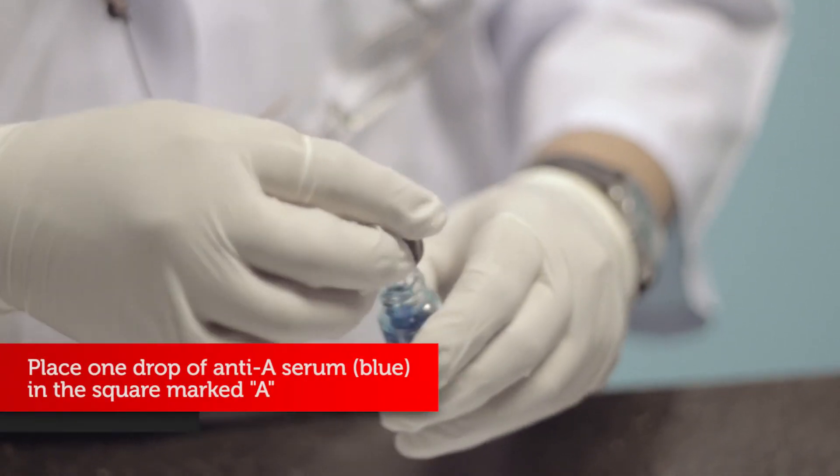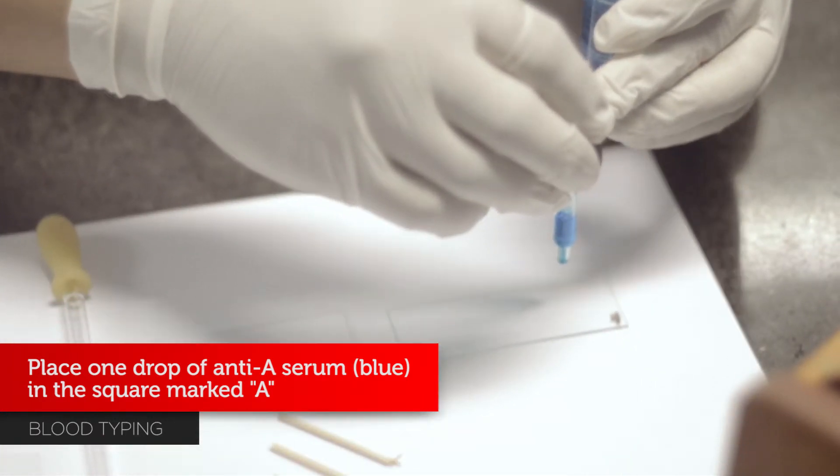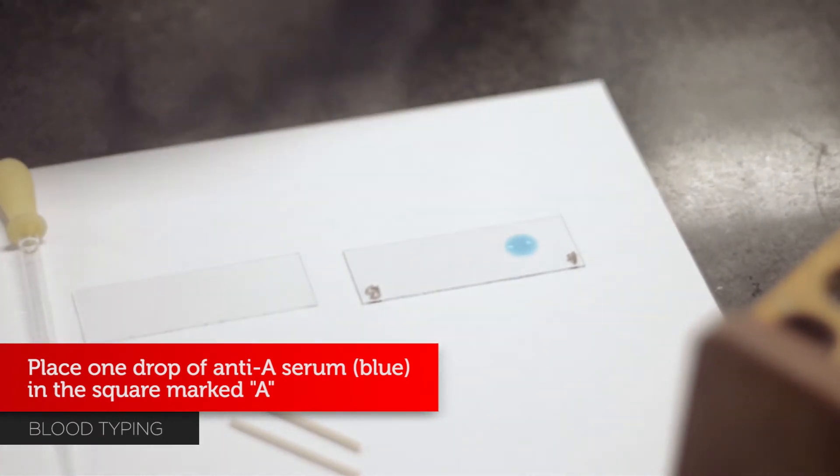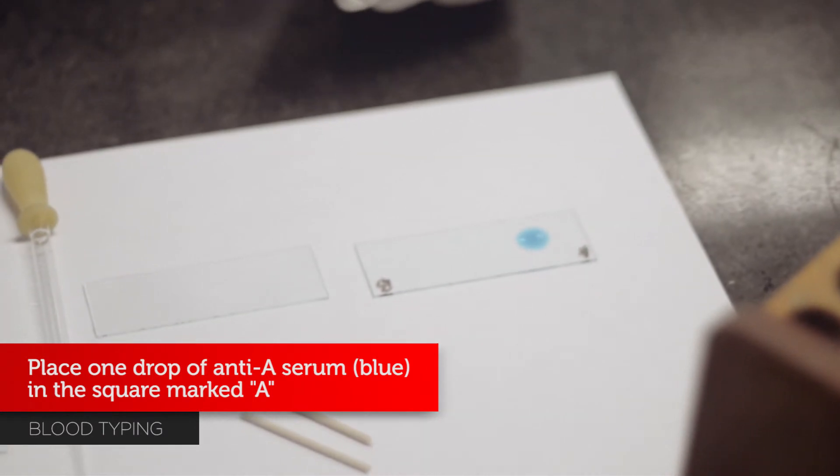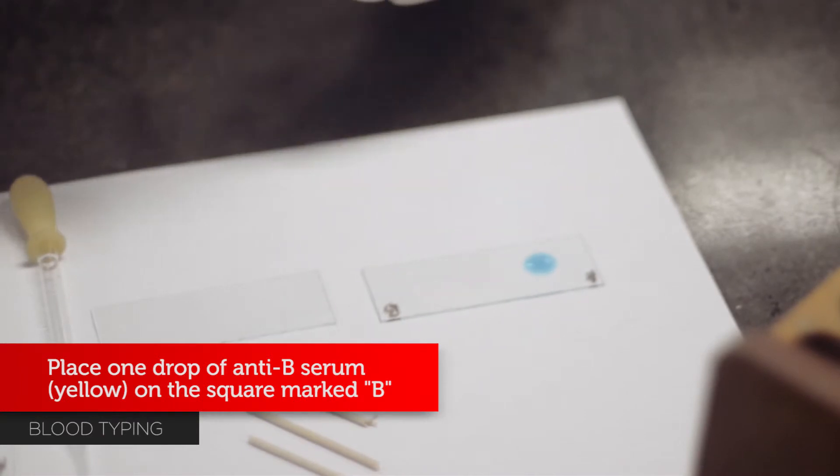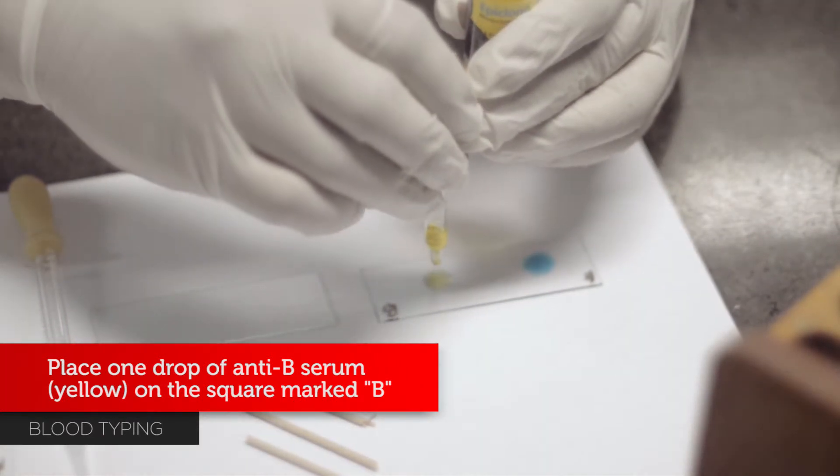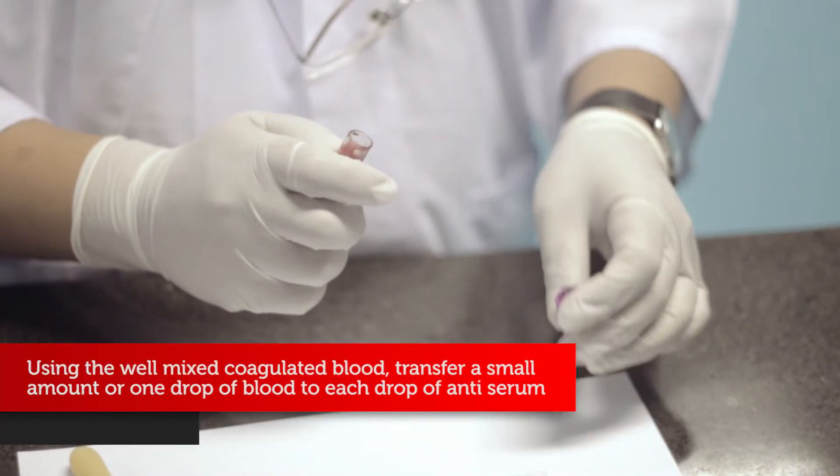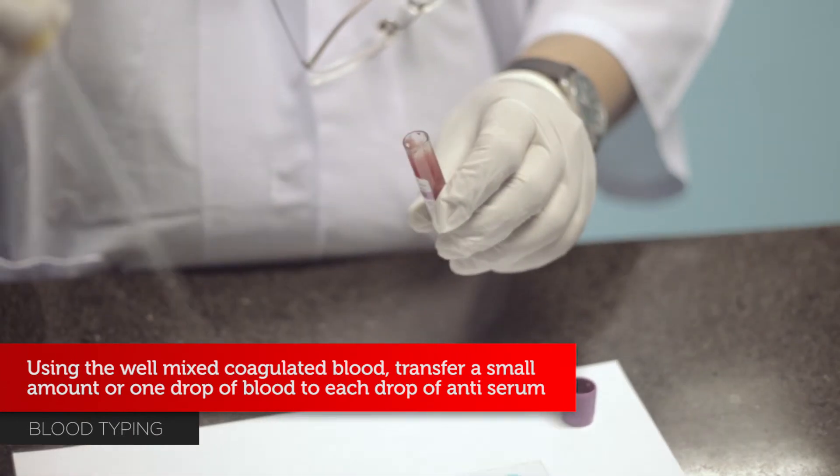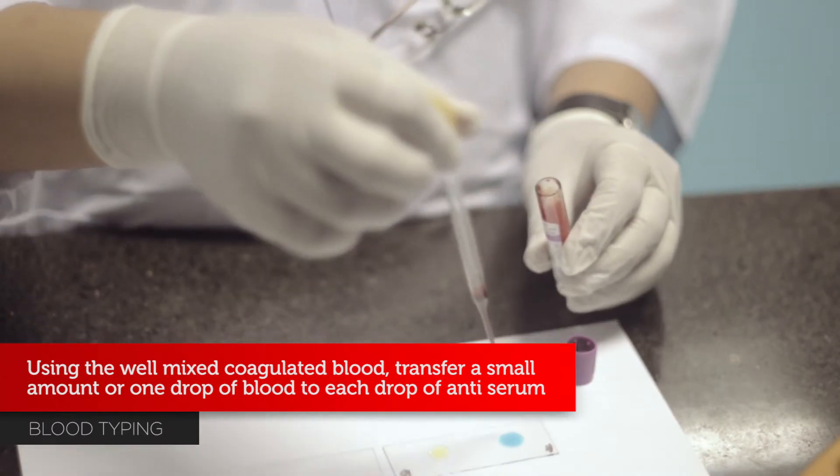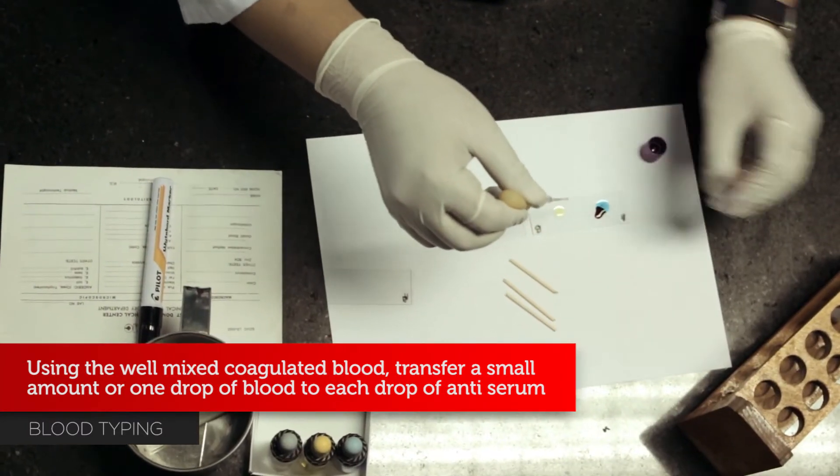Place one drop of anti-A serum, color blue, in the square part A, and one drop of anti-B serum, the yellow color, on the square part B. Using the well-mixed coagulated blood, transfer a small amount or one drop of blood to each drop of anti-serum.